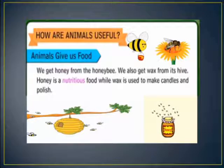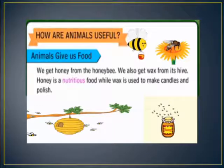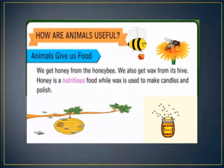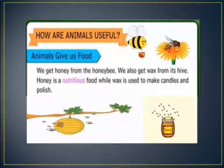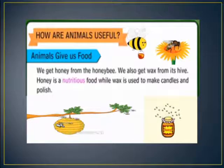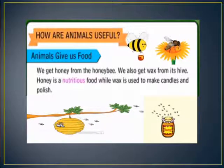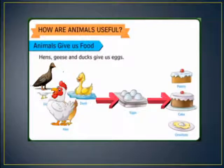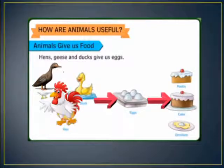Animals give us food. We get honey from the honey bee. We also get wax from its hives. Honey is a nutritious food, while wax is used to make candles and polish. Geese and ducks also give us eggs.